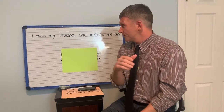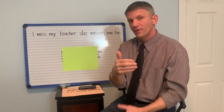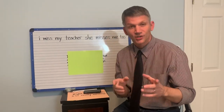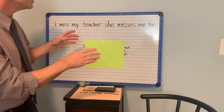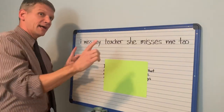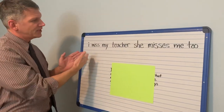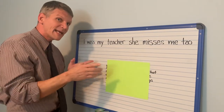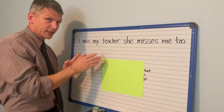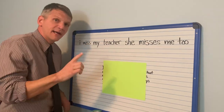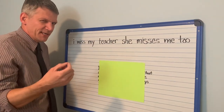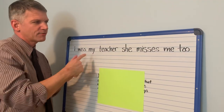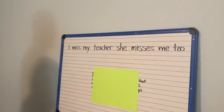I usually start writing lessons with some kind of warm-up where we look at a piece of writing that has mistakes in it, and we try to make corrections. So I want you to take a look at something. This is a short piece of writing that has some mistakes in it. It says, 'I miss my teacher. She misses me too.' Your challenge, boys and girls, right now — you don't need to rewrite the sentence, just look at it. Try and find any mistakes — editing mistakes like capital letters or punctuation like periods. I'm going to give you a couple seconds, and then we'll see if you got them.